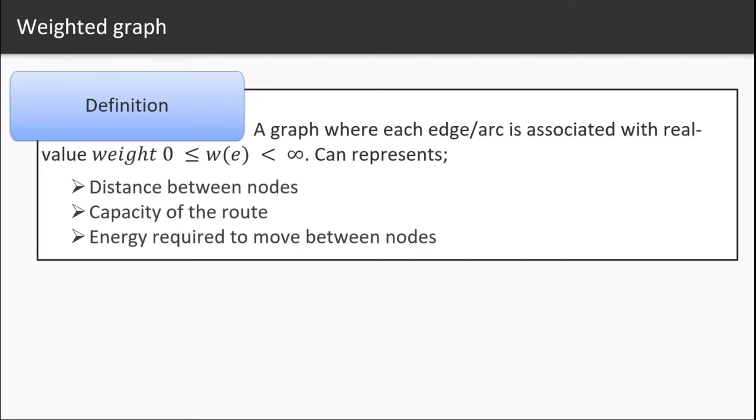This weight can represent either distance between nodes, capacity or bandwidth of the routes between nodes, or could also represent energy required by a node to move the data packet from one source to destination.